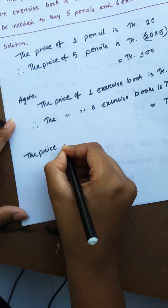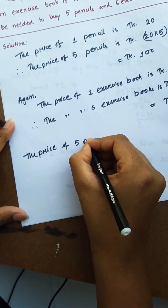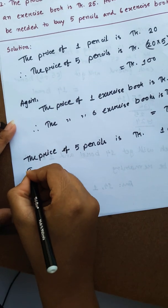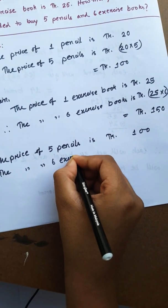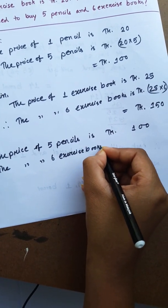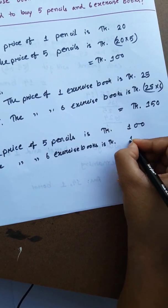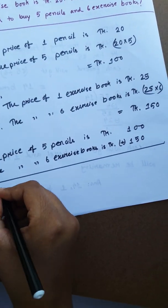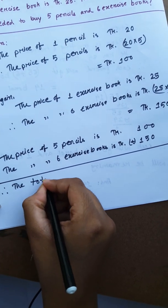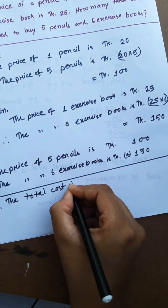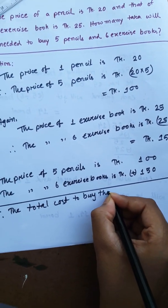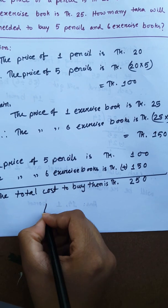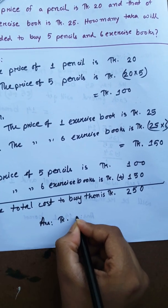The price of 5 pencils is taka 100. The price of 6 exercise books is taka 150. Therefore, the total cost to buy them is taka 100 plus taka 150, which equals taka 250. So the answer is taka 250.